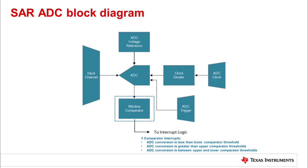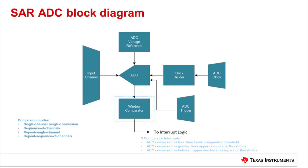The ADC output is fed through a window comparator, which can be used to trigger three different interrupts. Interrupts can be configured to trigger when a conversion is less than the lower comparator threshold, greater than the upper comparator threshold, or in between the upper and lower thresholds. This functionality can be useful for low power monitoring applications, such as battery monitoring.